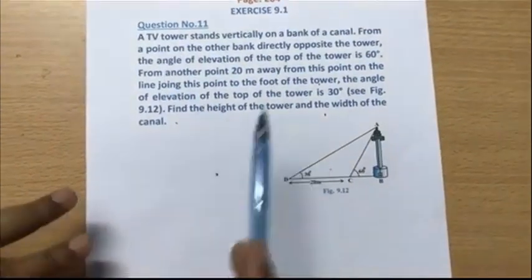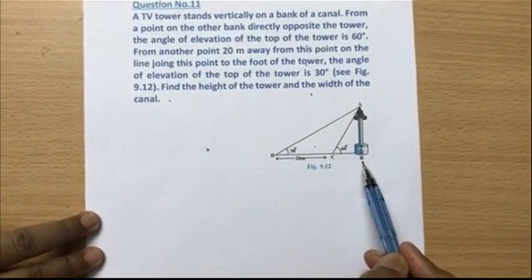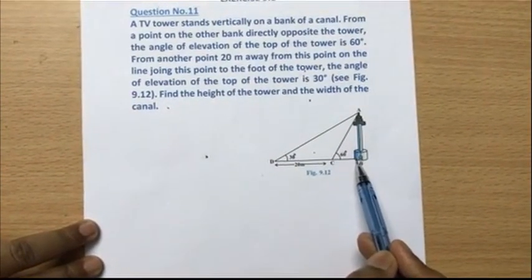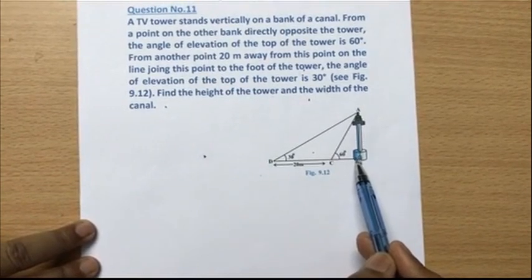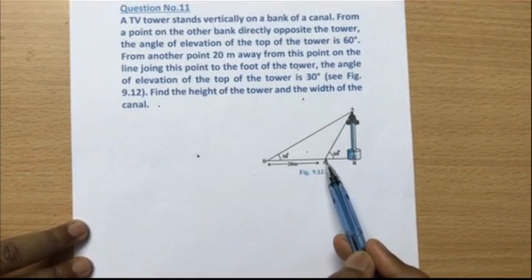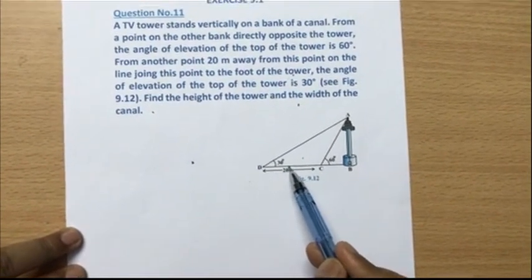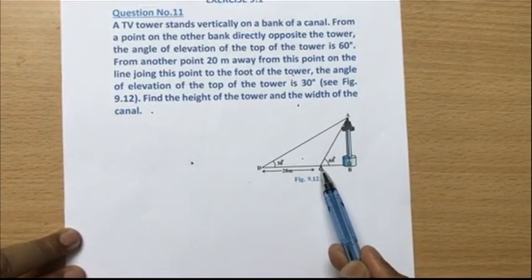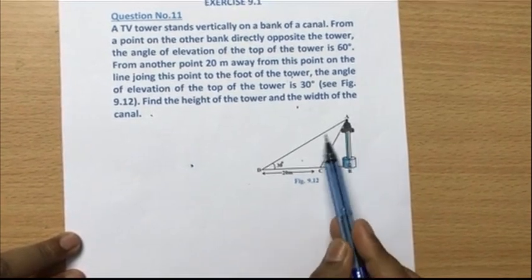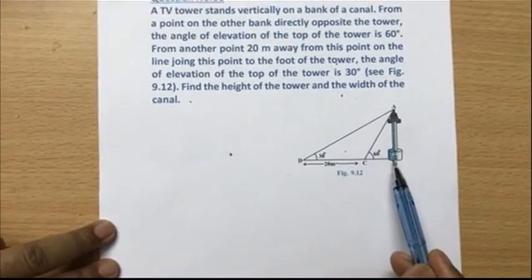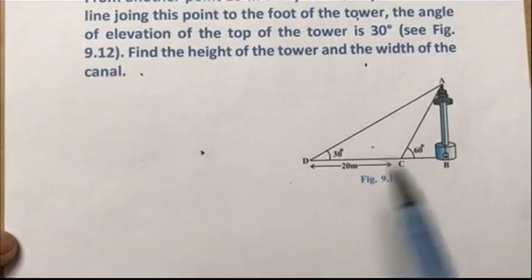Let us first analyze this diagram. This is the TV tower, named AP. It stands vertically on a bank of the canal. From a point on the other bank directly opposite the tower, the angle of elevation of the top is 60 degrees. From another point 20 meters away on the line joining this point to the foot of the tower, the angle of elevation is 30 degrees. Find the height of the tower and width of the canal.